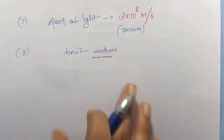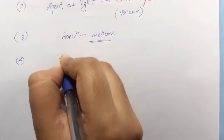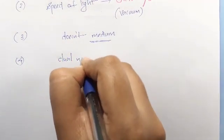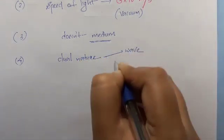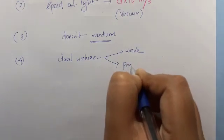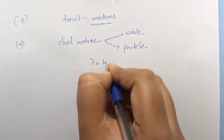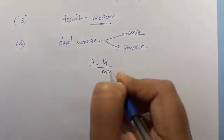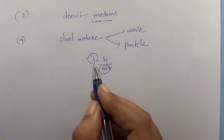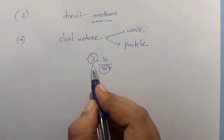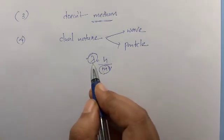The fourth property: light exhibits dual nature — both wave-like nature and particle-like nature. The de Broglie relation is lambda equals h divided by mv, where mass is involved. For objects with very small mass, wave nature becomes significant.